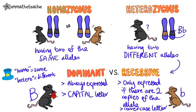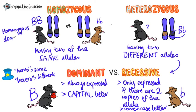Since the dominant allele is for black fur, the mouse will have a phenotype of black fur. We can practice our genotypes: this mouse has two dominant alleles, so we write it as BB, and the phenotype is black fur. This mouse has two recessive alleles, so we write it as bb, and the phenotype is brown fur. We call these genotypes homozygous dominant if there are two dominant alleles, and homozygous recessive if there are two recessive alleles.